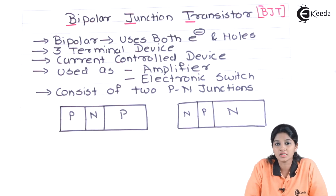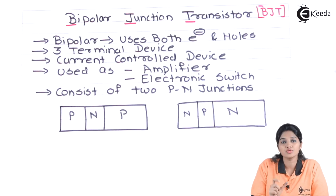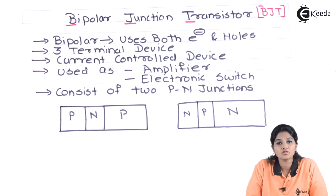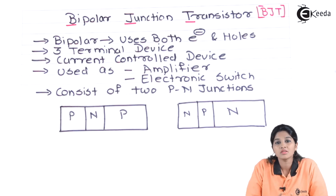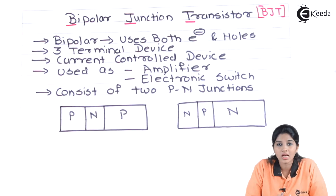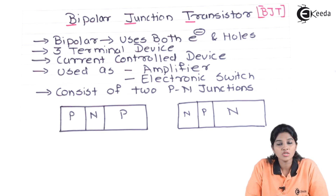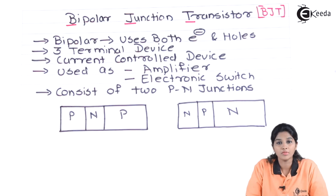As its name indicates, bipolar means it uses both electrons as well as holes for carrying the current. That's why it is called bipolar. Junction means it consists of two junctions, Je and Jc, that is the emitter-base junction and the collector-base junction. BJT is basically a three terminal device, which are nothing but emitter, base and collector.